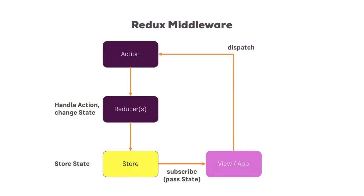Let's have a look at another feature of Redux: middleware. This is the flow diagram you already know. The application dispatches actions, actions are handled by reducers, the reducers return a new state, the state is stored in the store, and the store then passes this back to our application.